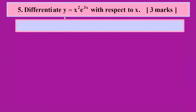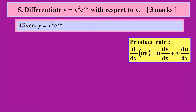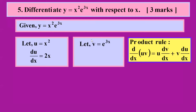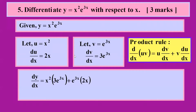In question five, y = x² · e^(3x). This is a product rule case. I set u = x² and v = e^(3x), differentiate du/dx first, then handle v. So dv/dx is found by differentiating e^(3x).